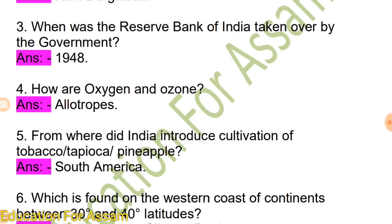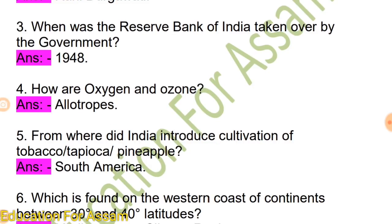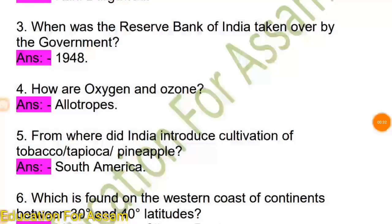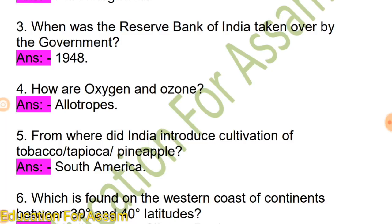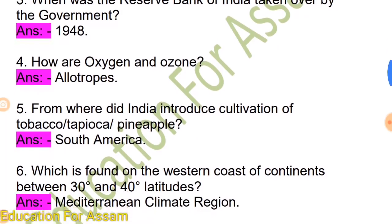Which climate is found on the western coast of a continent between 30 and 40 degrees latitude? Between 30 and 60 degrees latitude on the western coast — this is the Mediterranean climate region.